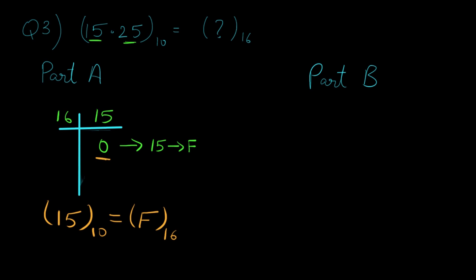Now let's have a look at part B. For part B we have the fraction value 0.25 in decimal which needs to be converted to hexadecimal value. As we solved in question number 2, we multiply it with number 16, which gives us an answer of 4.0.